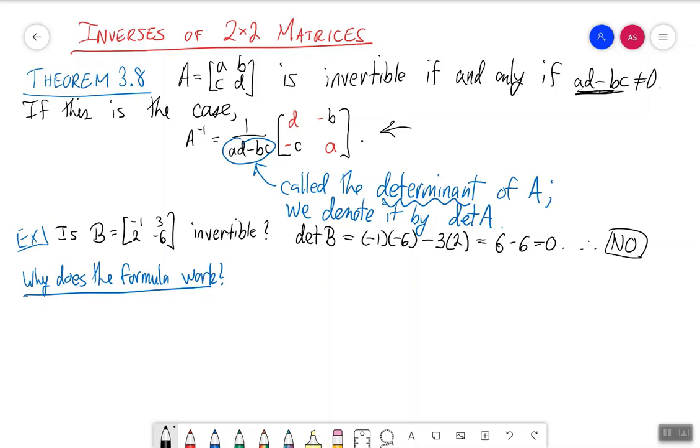So why does this formula work? Well, I want to focus on just part of the formula. I'm going to forget about that 1 over determinant part and just look at the product of the matrix A, A, B, C, D, and the rest of the right-hand side, D minus B minus C, A. When I multiply this out, let's see what I get.